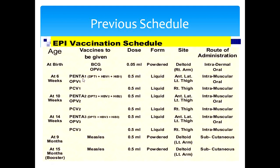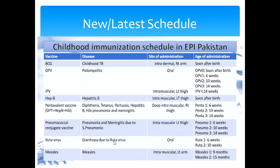At 6 weeks: Penta1 is given, which includes DPT1, hepatitis B virus dose 1, and Haemophilus influenzae type B dose 1 — five vaccines in total, hence the name PENTA. This is given 0.5 ml intramuscularly in the anterolateral left thigh. Pneumococcal vaccine 1 — 0.5 ml — is given in the right thigh intramuscularly. OPV1 is given as 2 oral drops. In the new schedule, rotavirus vaccine is also added at 6 weeks.